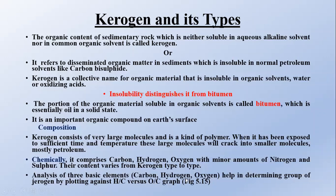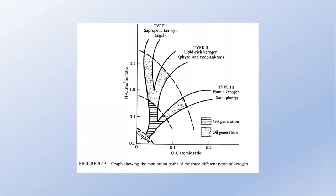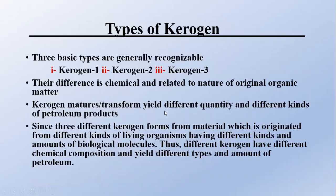The two defining components of kerogen can be identified by plotting hydrogen-to-carbon ratio versus oxygen-to-carbon ratio. Looking at the hydrogen-to-carbon ratio: if it is up to 1.5, it is Type 1 kerogen; if it is less than 1.5, it is Type 2 kerogen; and if it is less than 1, it is Type 3 kerogen.